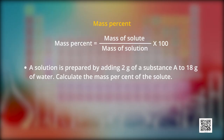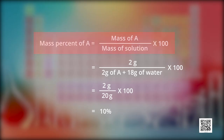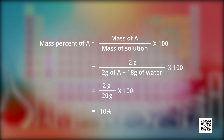Mass percent can be calculated as: mass of solute divided by mass of solution, multiplied by 100. Let us solve a numerical. A solution is prepared by adding 2 grams of substance A to 18 grams of water. Calculate the mass percent of the solute. Mass percent of A equals mass of A divided by mass of solution into 100, which is 2 g divided by (2 g + 18 g) into 100 = 2/20 × 100 = 10 percent.